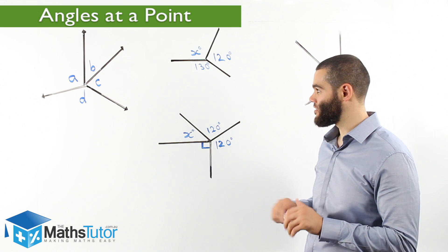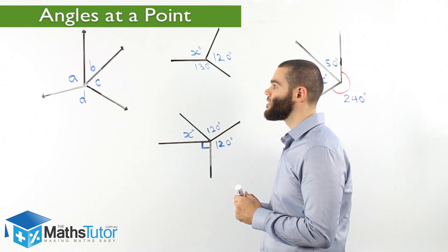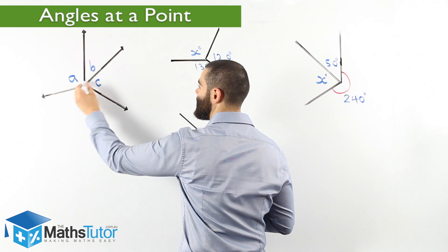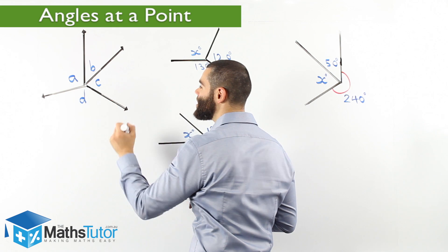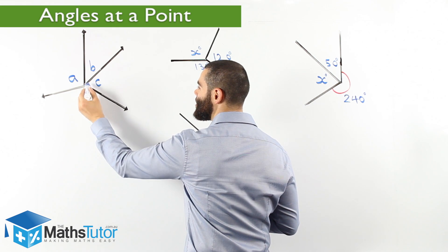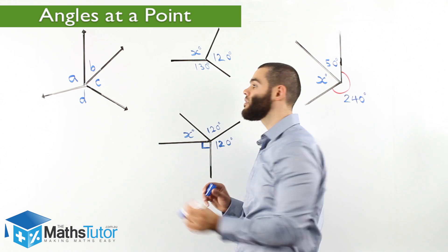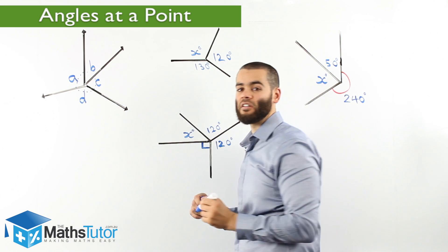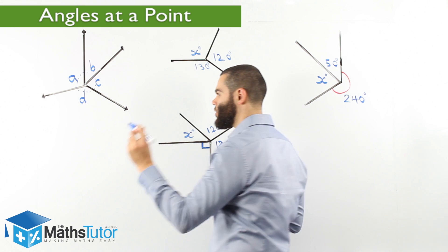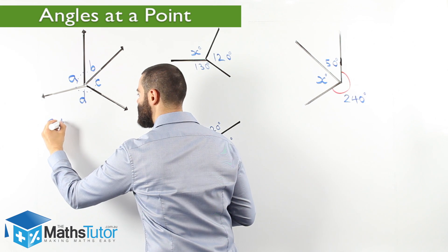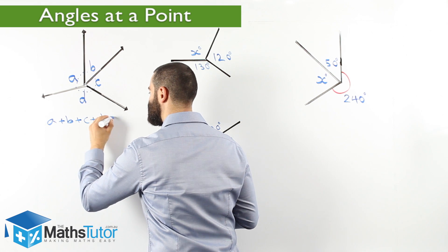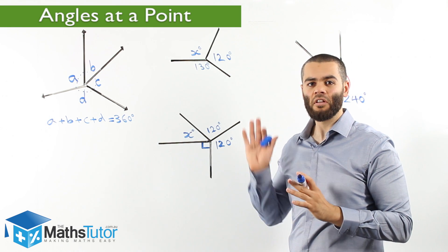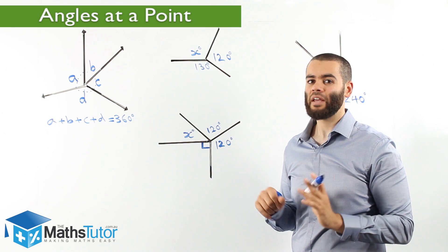Let's see how it actually works. In this scenario here, we have a diagram and we have the angles: angle A, B, C, and D. As you can see, angle A, B, C, and D all together meet at a central point. That's why we call it angles at a point and they all add up to 360 degrees. They make a full turn — 360 degrees — meaning A plus B plus C plus D equals 360 degrees. So how are we going to use this to solve a missing angle using angles at a point?